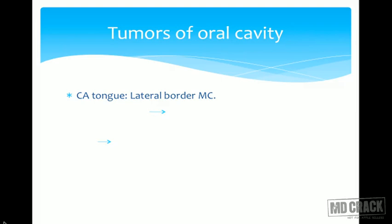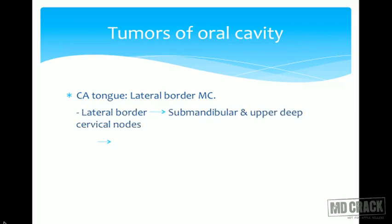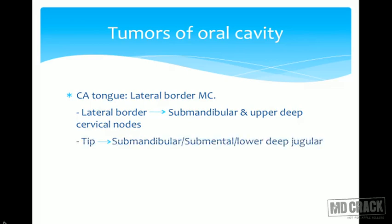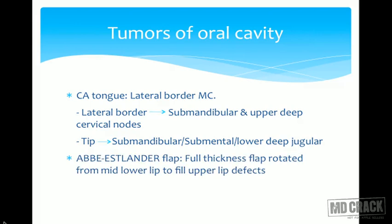In carcinoma of the tongue, the most common site where carcinoma occurs is the lateral border. From the lateral border, submandibular and upper deep cervical nodes are involved. If it involves the tip, it spreads into the submandibular, submental, and lower deep jugular lymph nodes.